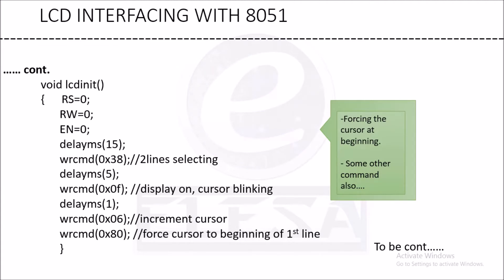Then delayms 5 — wait for 5 milliseconds. Then wrcmd 0x0F, which means we give the command 0x0F to the command register, so it will enable display on and cursor blinking at a certain position.